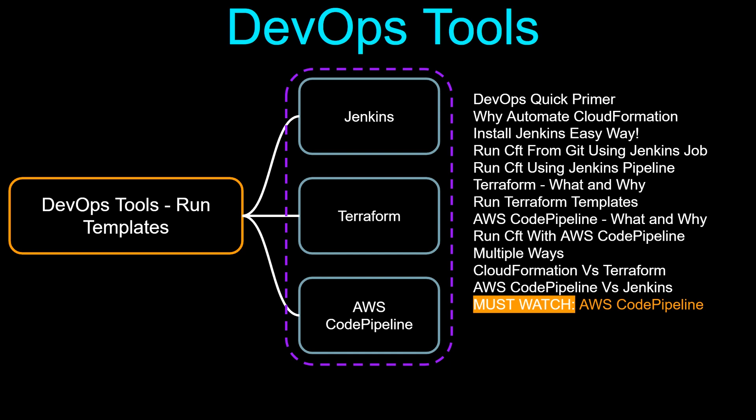One must-watch area is AWS CodePipeline, which is the native DevOps tool from AWS. It's relatively new compared to Jenkins and Terraform, but it's gaining a lot of popularity. I feel that in the future, the adoption of CodePipeline will be huge, so if you understand the concepts of CodePipeline, you will be ahead in the game.